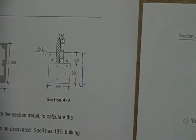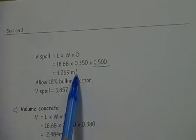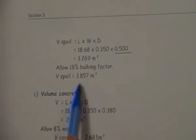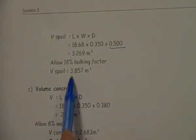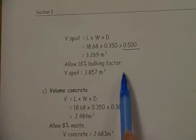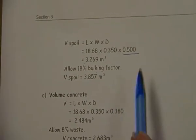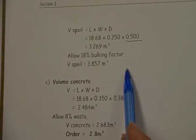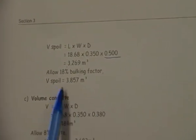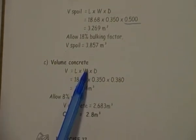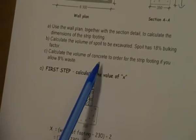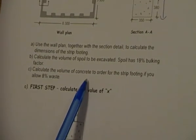We get that much in cubic meters, and we have to add our bulking factor. So the volume for the spoil is 3.857 meters cubed. On the job, you'd probably round that up to 4 meters cubed, or you'd be charged at the tip for 4 meters cubed. Now we come to volume for concrete.